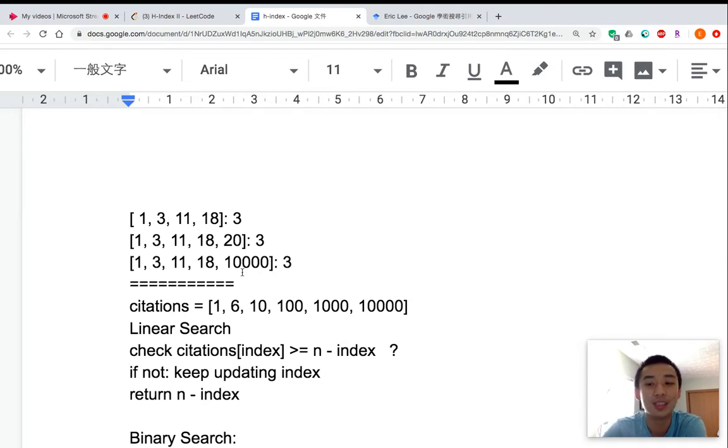So if the H-index is high, it not only guarantees the scientist has a greater amount of citations, but also guarantees that the scientist publishes a lot of good papers.